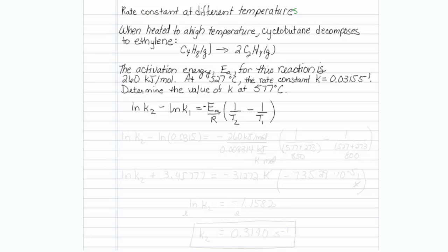Now this is where energies of activation actually come from. We get the rate constant at two different temperatures, and you can use this equation one way to actually figure out the activation energy. Or, once you know it, you can get the rate constants at a variety of different temperatures. So we are after k2.